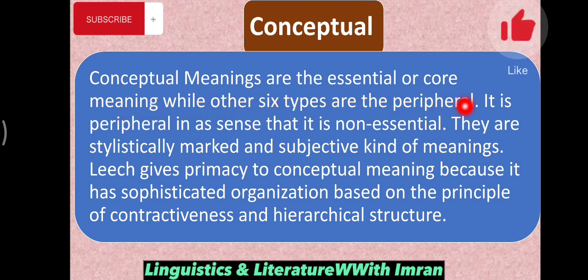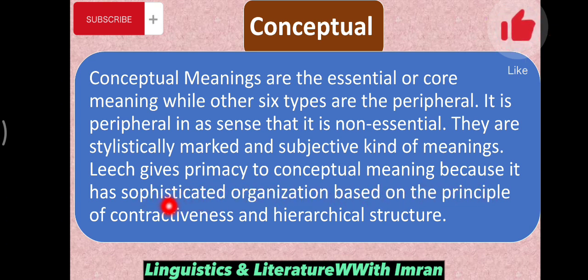Conceptual meanings are essential or core meanings, while the other six types are peripheral — peripheral in the sense that they are not essential. What is essential is conceptual meaning, or dictionary meaning. The other types of meaning are stylistically marked and subjective. Leech gives primacy to conceptual meaning because it has a sophisticated organization based on the principles of contrastiveness and hierarchical structure. It does not mean that other types of meanings are not used, but the main focus is given to conceptual meaning.